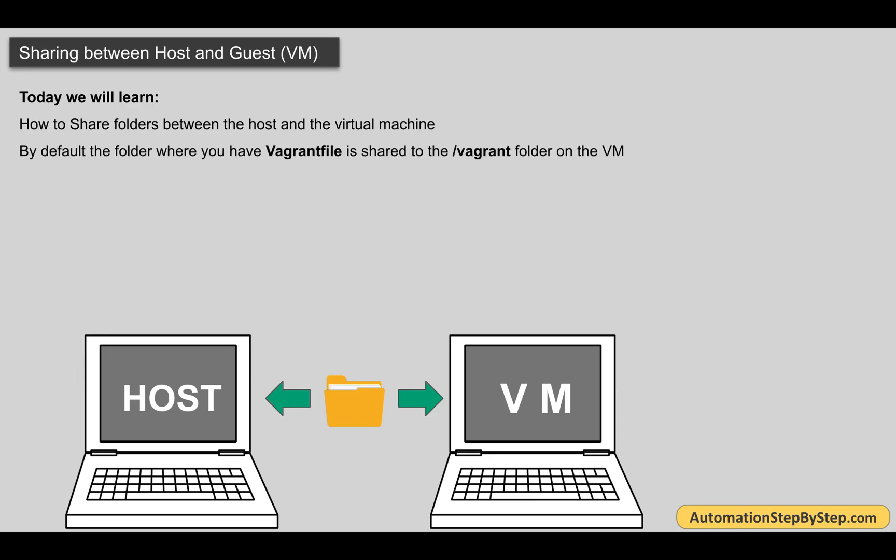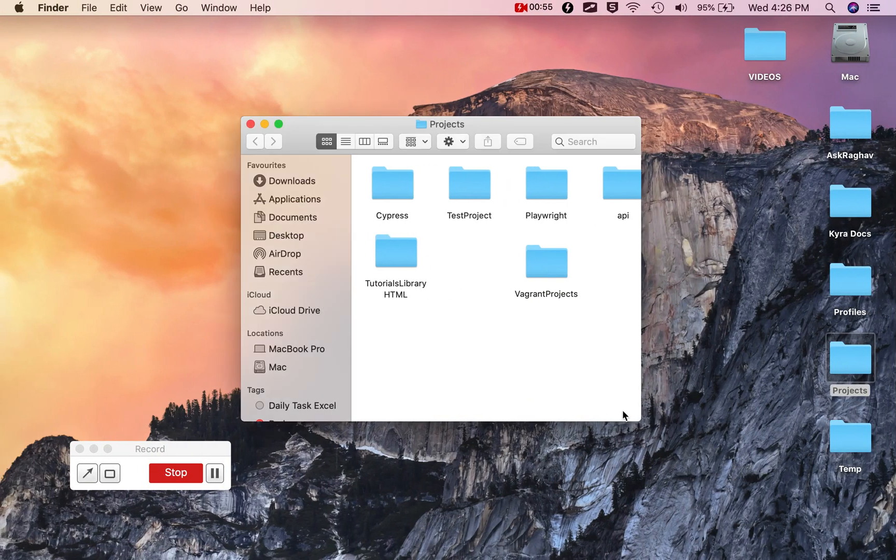By default, when you create your virtual machine, the folder where you have your Vagrantfile will by default be shared to a folder called the 'vagrant' folder on the virtual machine. Let me show you that, and then I will show you the steps how you can configure any other folder.